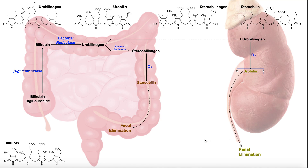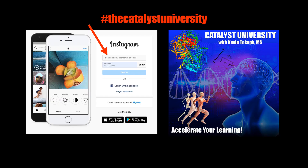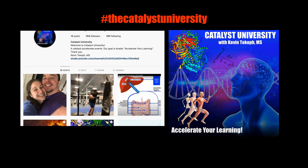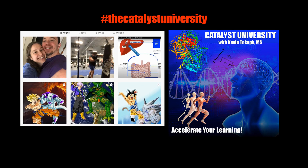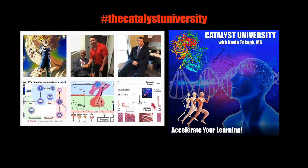Hopefully this video gave you a good understanding of the degradation of red blood cells and the degradation of heme, and what that means for the color of feces and urine. Thanks for tuning in. Please like, subscribe, and check out my Instagram for cool science and not-science stuff.